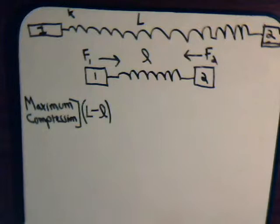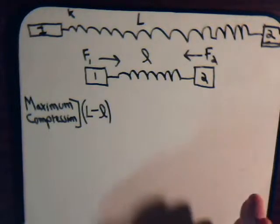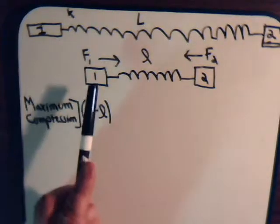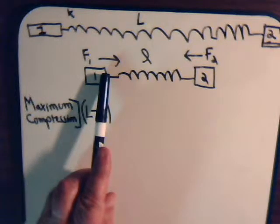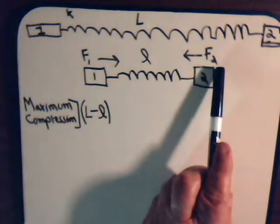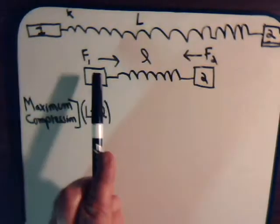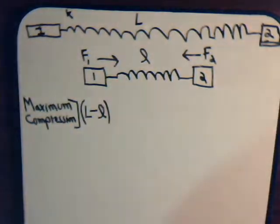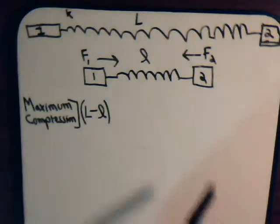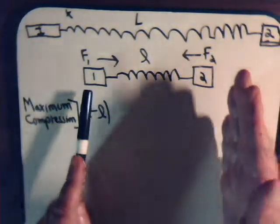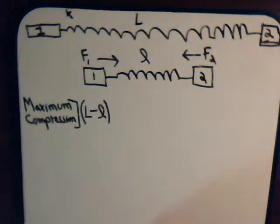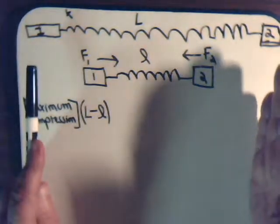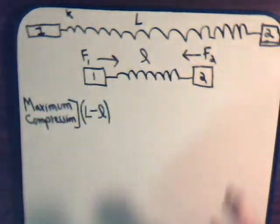We're compressing the spring in such a way that we're not shifting it to the left or to the right. That means the force we're exerting on block one, moving it this way, has to equal the force we're exerting on block two, moving it in this direction. If F1 was greater than F2, we'd be shifting everything to the right. Likewise, if F2 was greater than F1, we'd shift it to the left. So we apply equal forces F1 and F2 so that while compressing the spring, there's no translational motion.